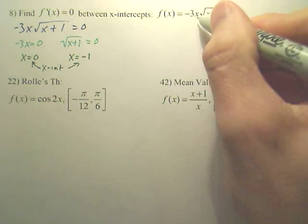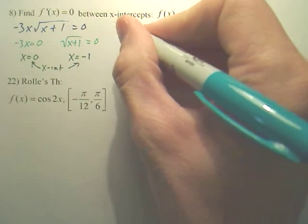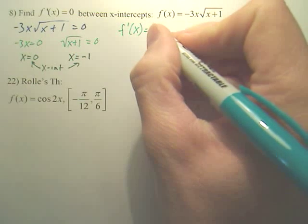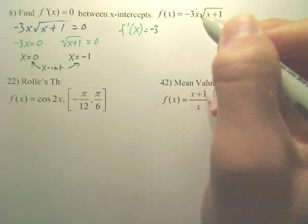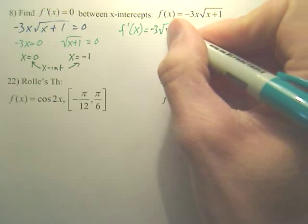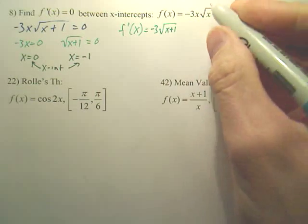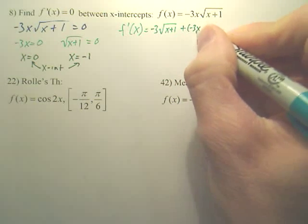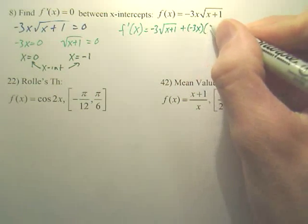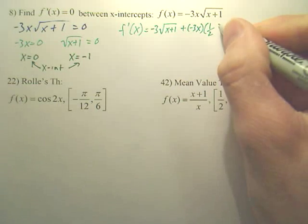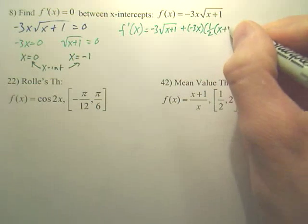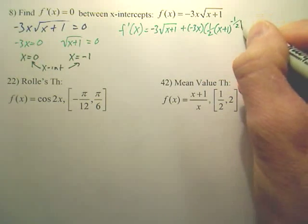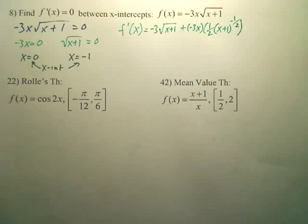Let's now find the derivative of this. So f prime x is equal to, this is the product rule, so it's going to be negative three times the square root of x plus one plus negative three x times one-half, x plus one to the negative one-half, and then I actually would have a times one, but I don't need the times one in there.